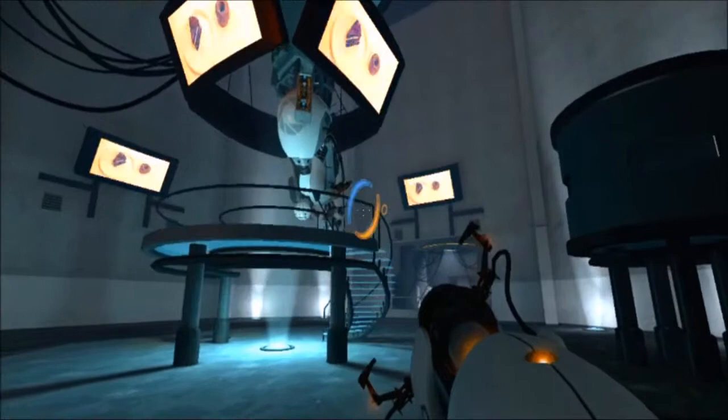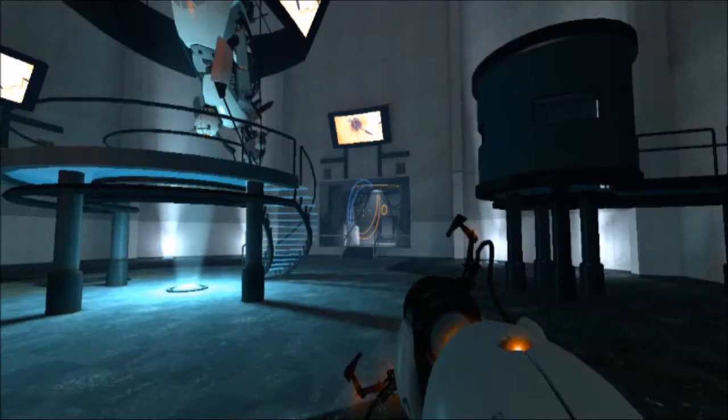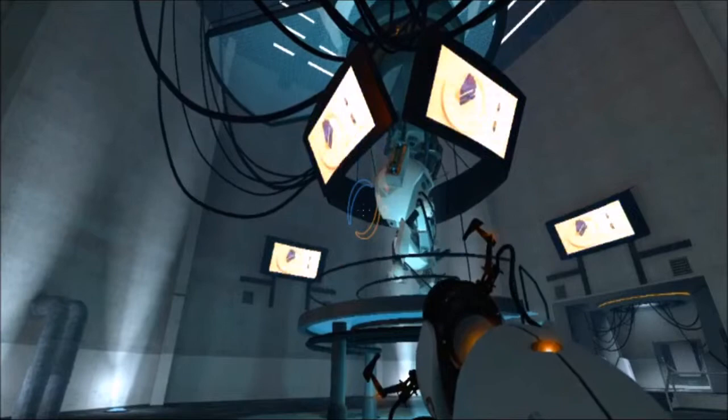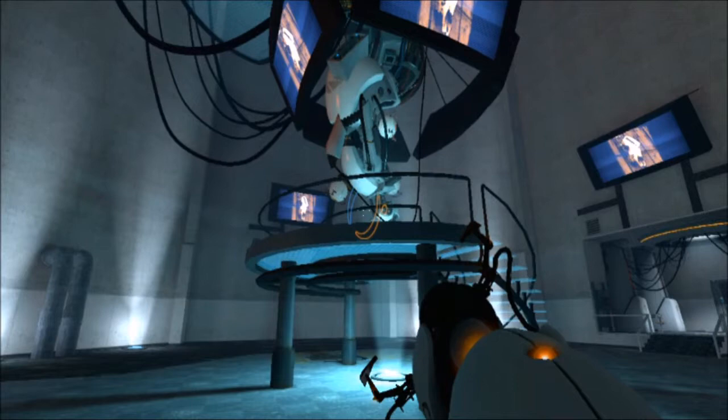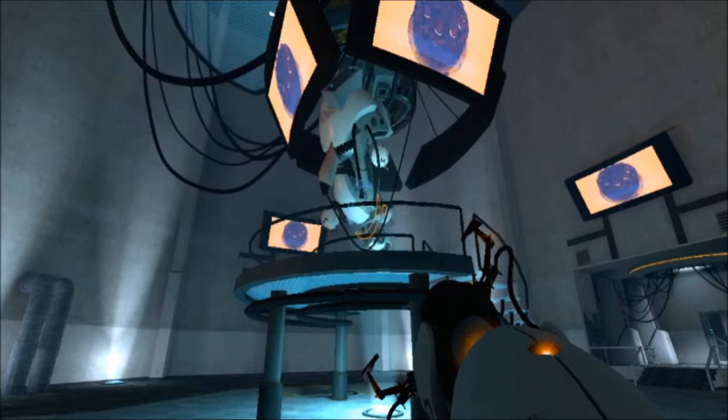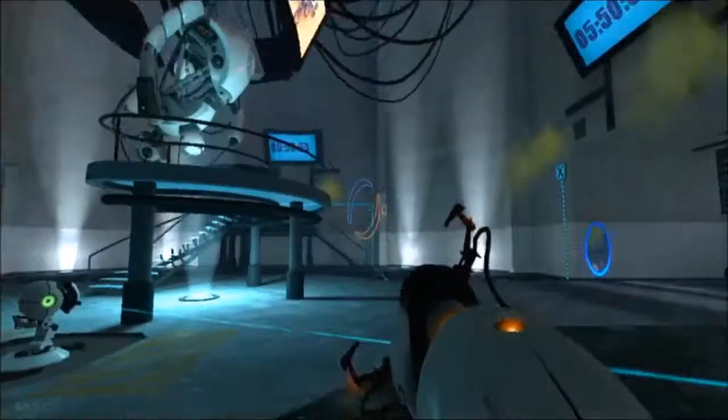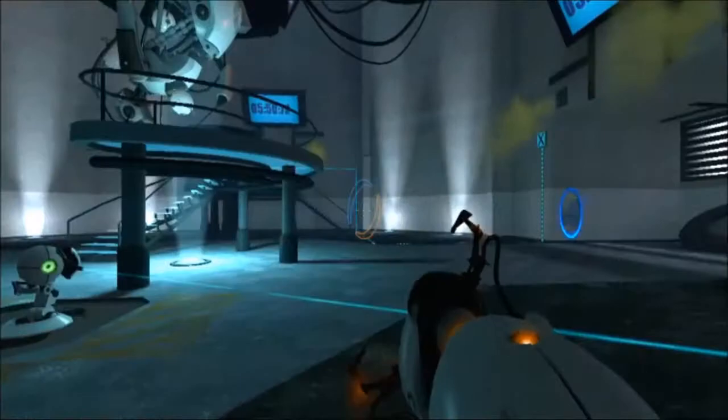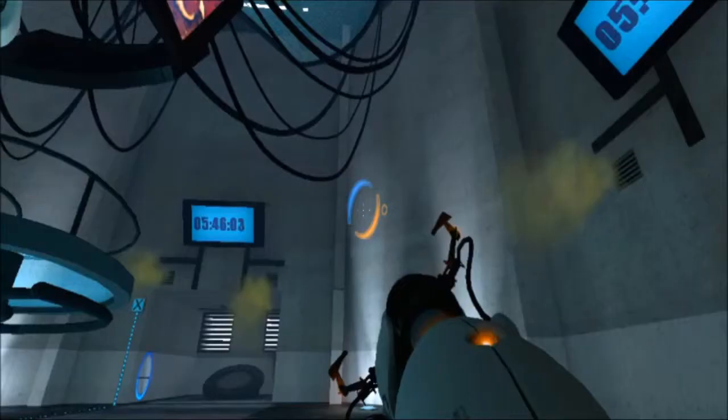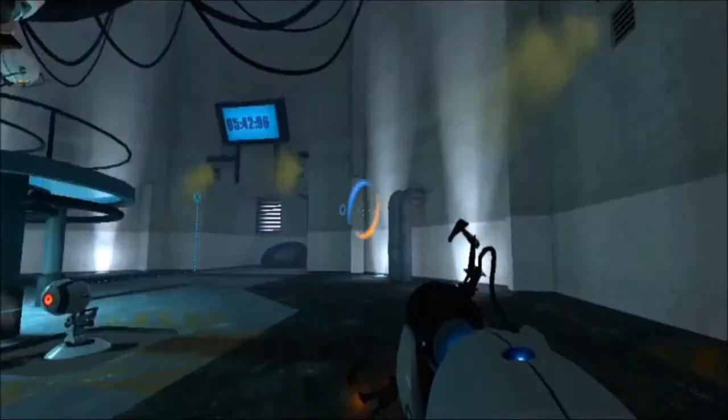I figured out what that thing you just incinerated did. It was a morality core they installed after I flooded the Enrichment Center with a deadly neurotoxin, to stop me from flooding the Enrichment Center with a deadly neurotoxin. So get comfortable while I warm up the neurotoxin emitters. Oh god! That core may have had some ancillary responsibilities. I can't shut off the turret defenses. Oh well. If you want my advice, you should just lie down in front of a rocket. Trust me, it'll feel a lot less painful than the neurotoxin.